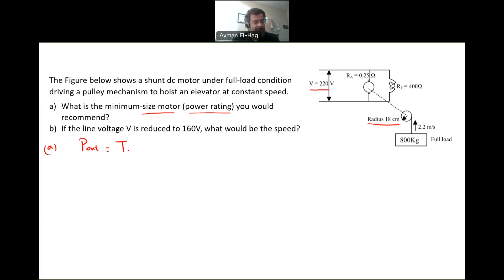is equal to T out, which is basically the torque that you apply, times omega. We need to find the torque because we know the speed. Omega is equal to V over R. This is if you want to convert from a linear speed to rotational speed, you divide by the radius. This will be equal to 2.2 millisecond divided by 0.18 meter, which gives us 12.22 radian per second.